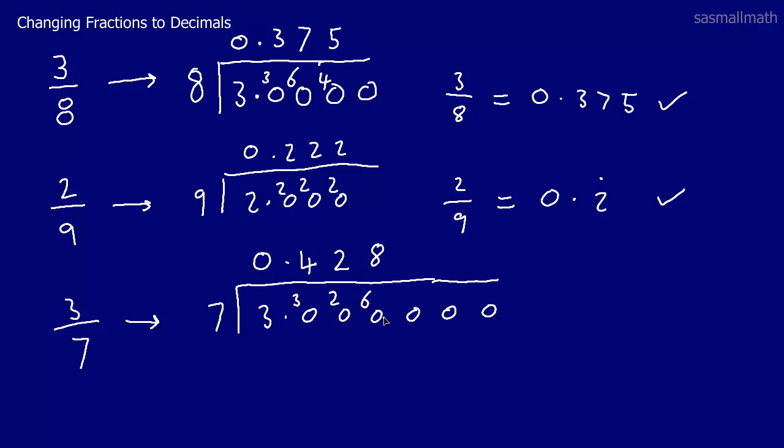56 from 60. That's 4. Put the 4 there. 7s into 40 now. 5 7s are 35. Put the 5 there. 35 from 40 leaves us 5.